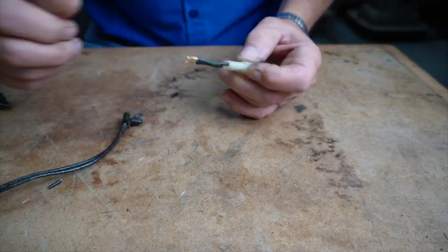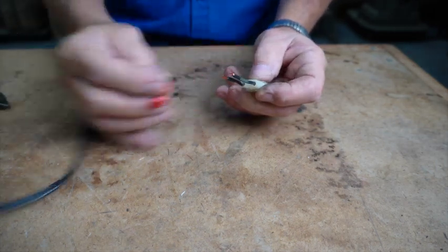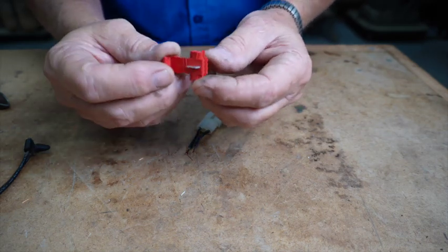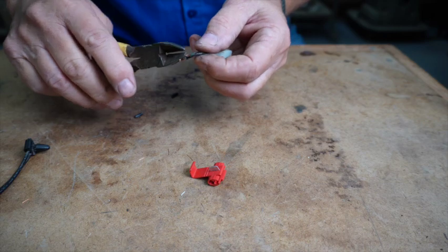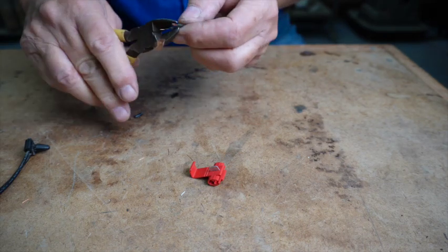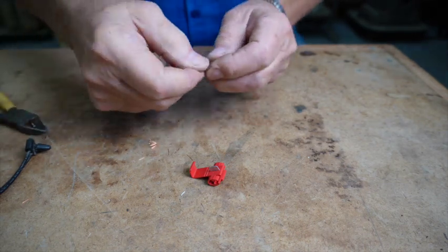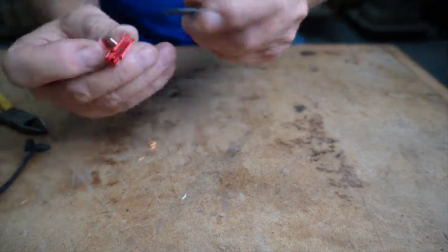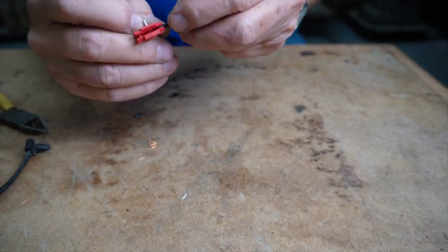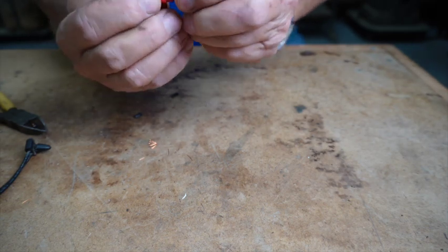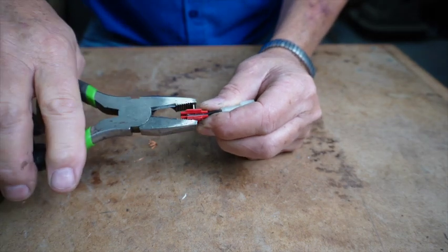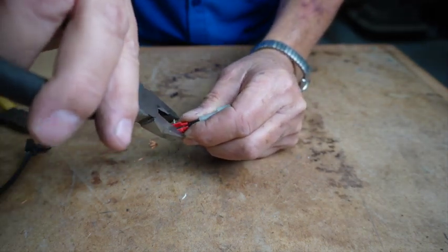What I like to use are these splicers here. I get them at Harbor Freight and they're really neat to use because you can just clip the ends of the wire off, one that has a butt in it, you can put both wires in these, put them both in the holes there, and they butt down, take a pair of pliers.